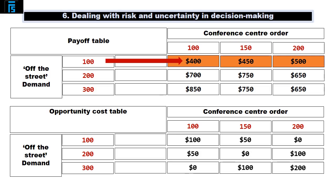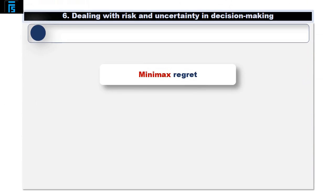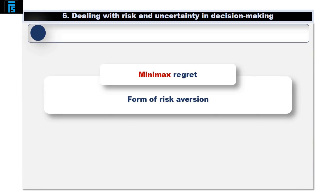If we repeat this process for off-the-street demand of 200 and 300 — the other two rows in the table — we will have completed Jack's opportunity cost table. We use the table by reading down each column. For example, the first column: if Jack agrees to supply 100 sandwiches, his worst possible regret or opportunity cost is $100 — at worst he will be $100 off the best outcome he could have expected. Jack's maximum possible regret is minimised by choosing to supply either 100 or 150 sandwiches to the conference centre, as each choice has a maximum regret of $100. This approach is known as minimax regret and is a form of risk aversion.